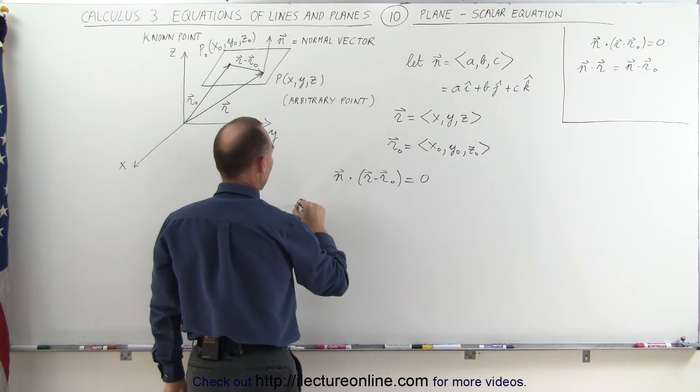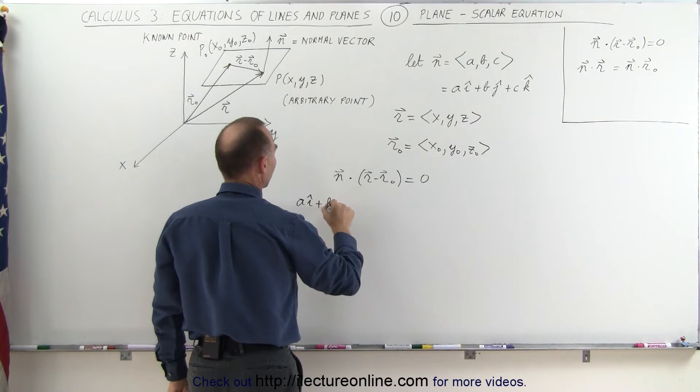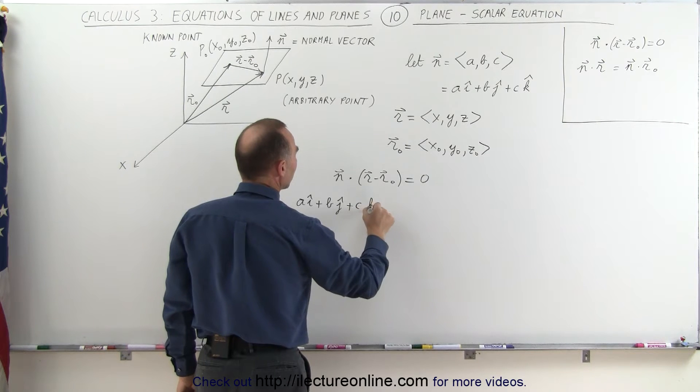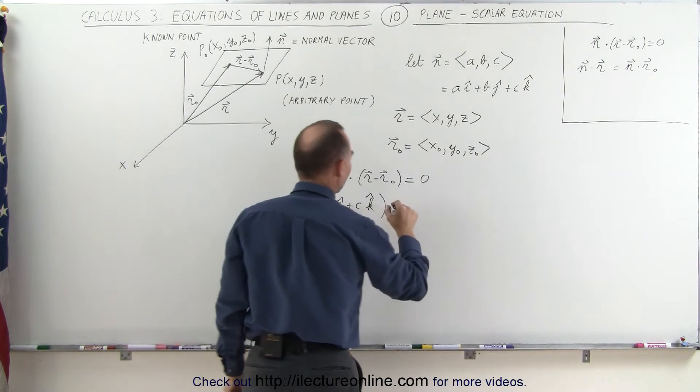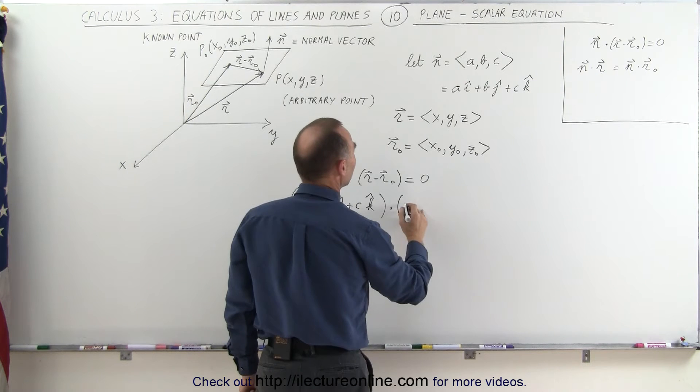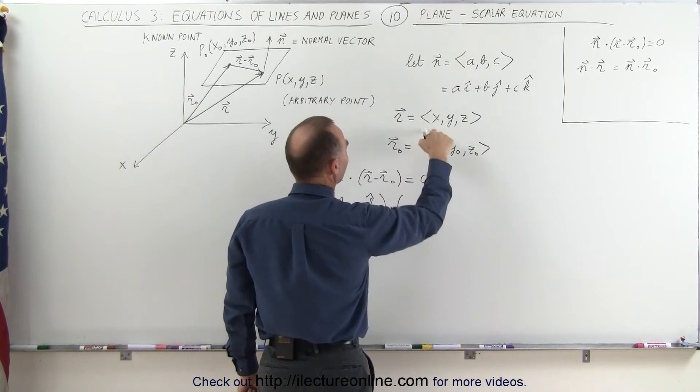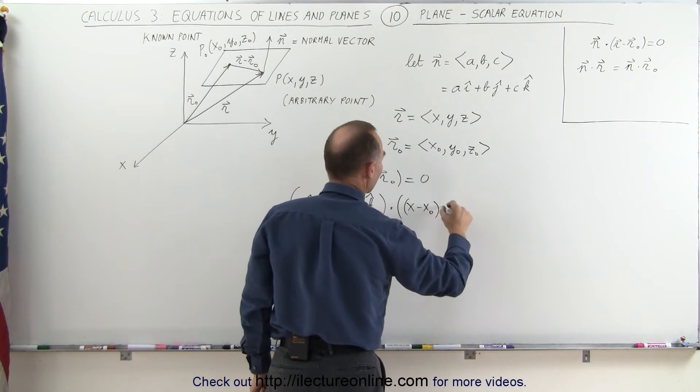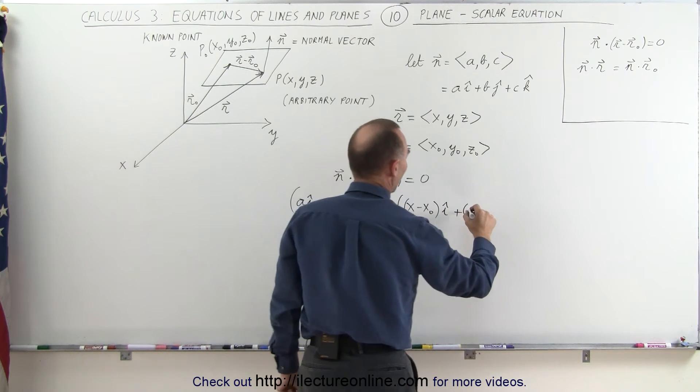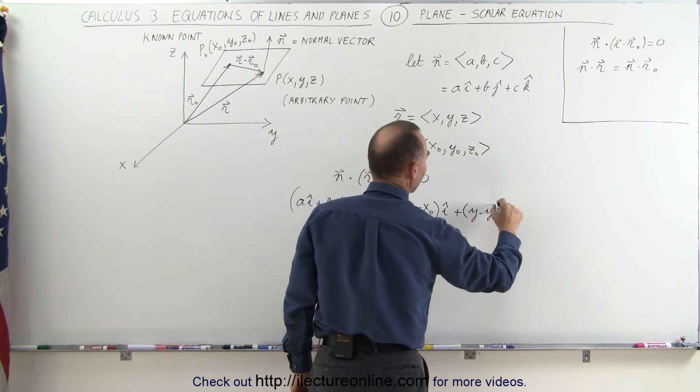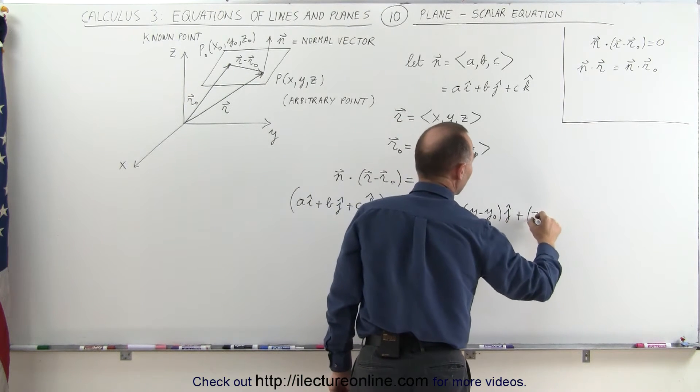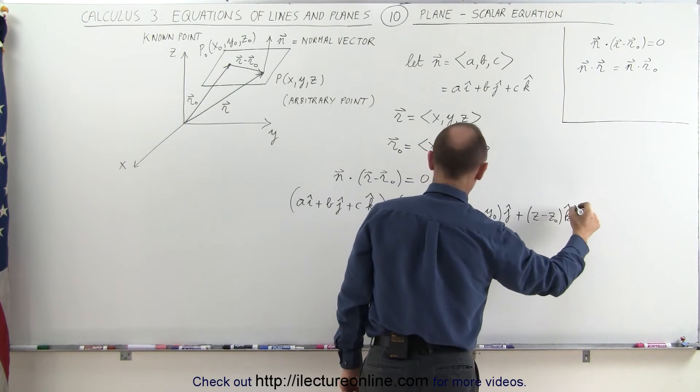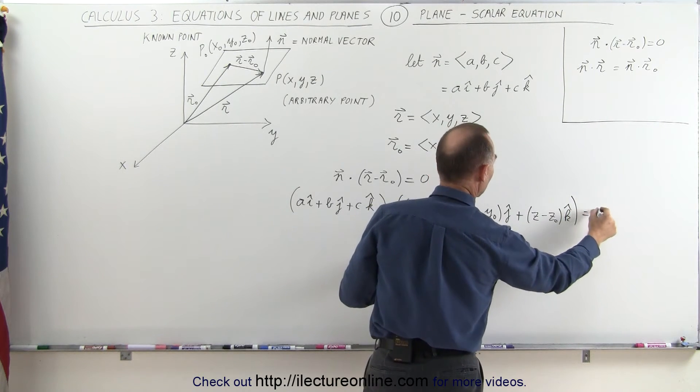The normal vector would be a in the i direction plus b in the j direction plus c in the k direction. And we're going to have the dot product with the difference of those two vectors. That would be x minus x sub-naught in the i direction plus y minus y sub-naught in the j direction plus z minus z sub-naught in the k direction. And that must equal zero.